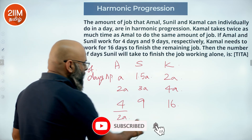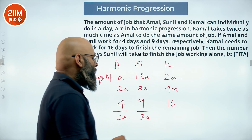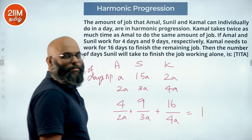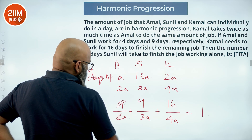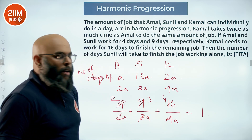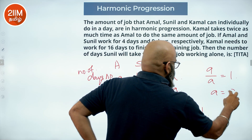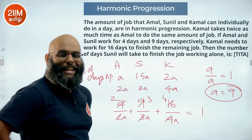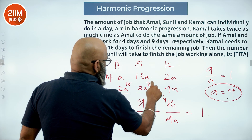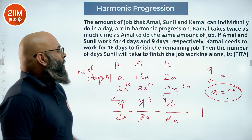Setting up the equation: work done is 9 days divided by 3A, plus 16 days divided by 4A. Simplifying: 2/A + 3/A + 4/A = 1, giving 9/A = 1, so A = 9.